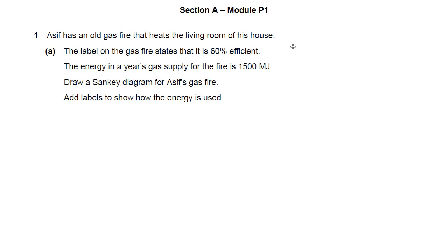Hi there. Question 1 on this OCR specimen paper — it's a P1 question. Asif has an old gas fire that heats the living room of his house. The label on the gas fire says 60% efficient. There's some important data there. The energy in a year's gas supply for the fire is 1500 megajoules.